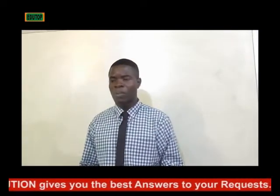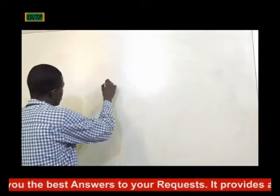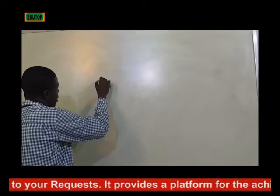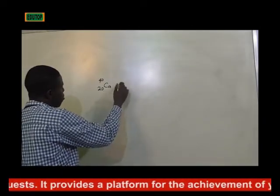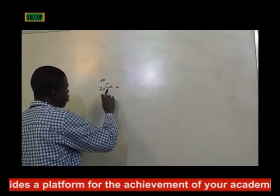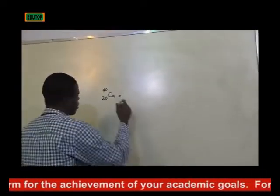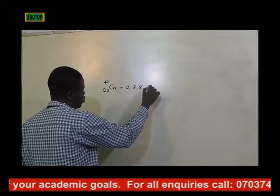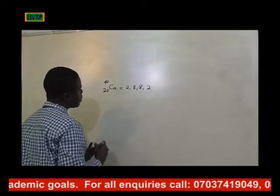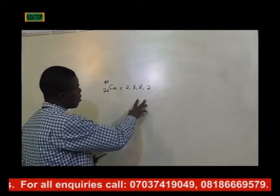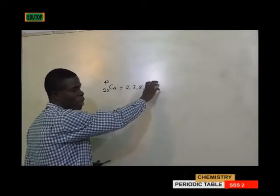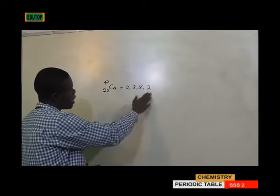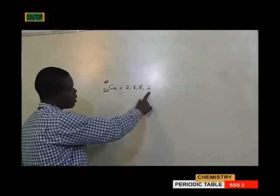For example, take the element calcium. Calcium has an atomic number of 20 and a mass number of 40. Based on the Bohr model, which talks about the arrangement of elements based on shells, if you arrange this atom it has the configuration 2, 8, 8, 2. Elements are classified into groups by virtue of the valence or outermost electrons, so this element belongs to group 2 because the valence electron is 2.